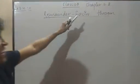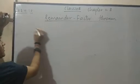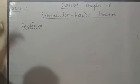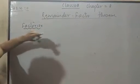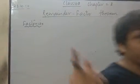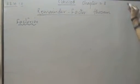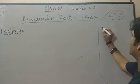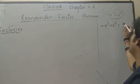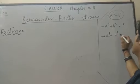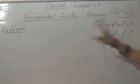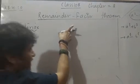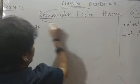Now chapter name is Remainder Factor Theorem. In this chapter also they will write factorize. In class 9, one full chapter was there of factorization. Again they will write factorize. Now how will you recognize this question is of Remainder Factor Theorem or simple factorization class 9th way?